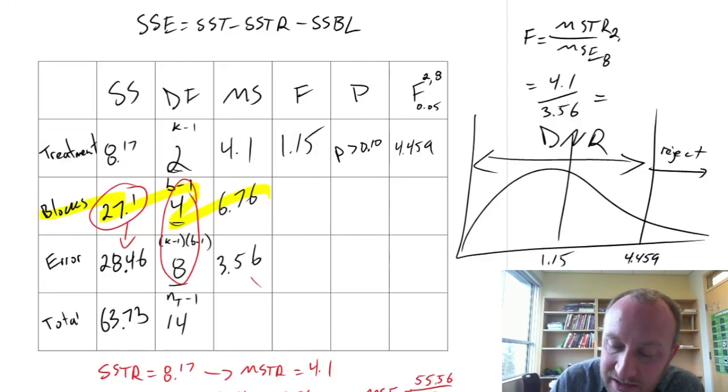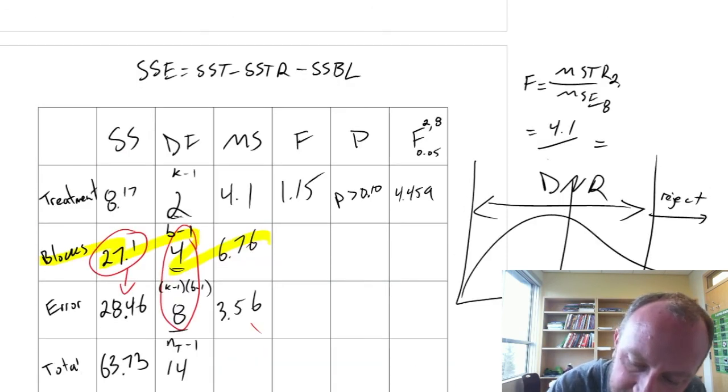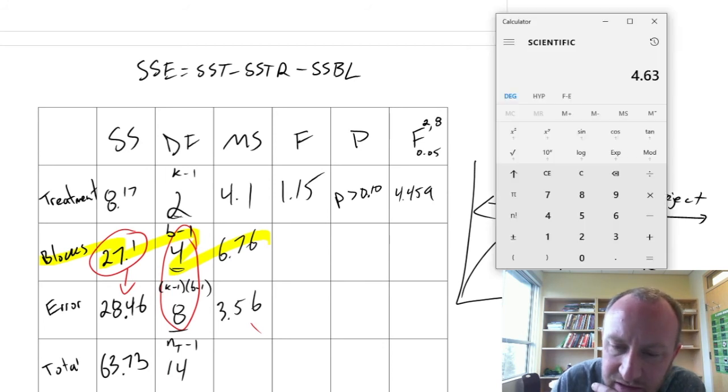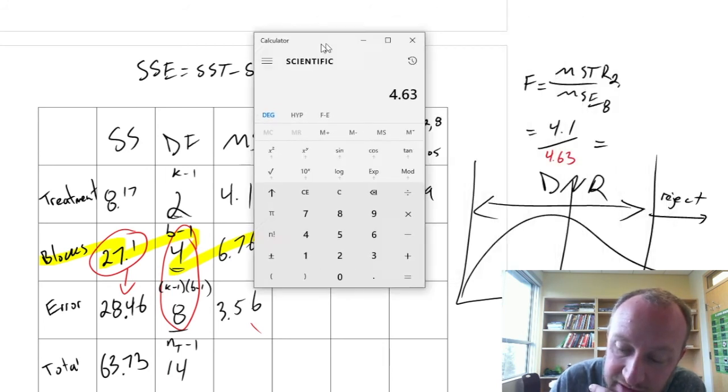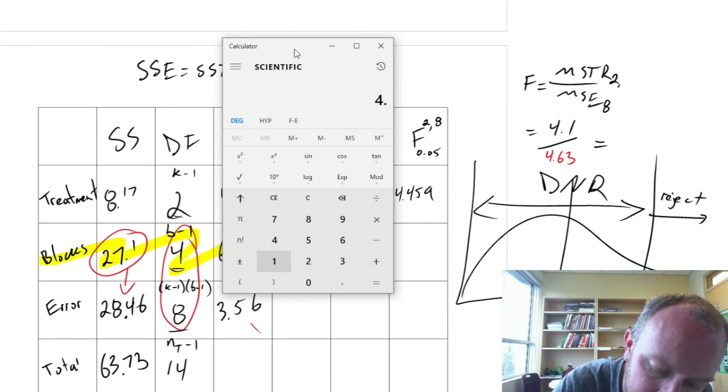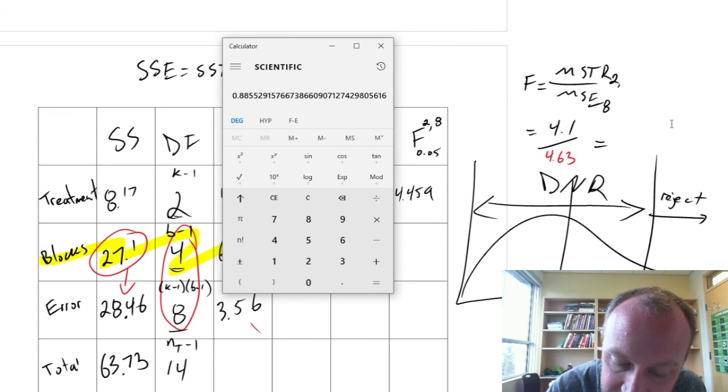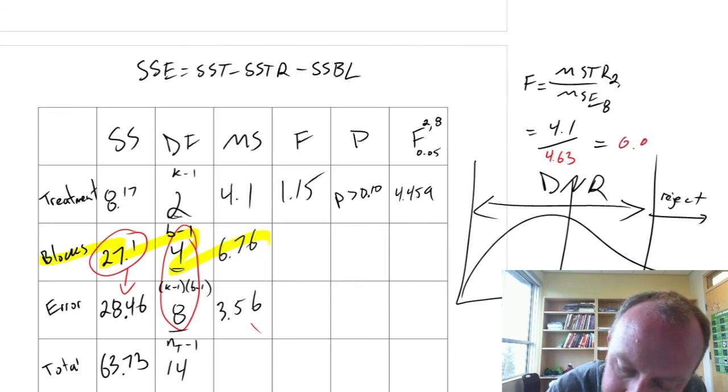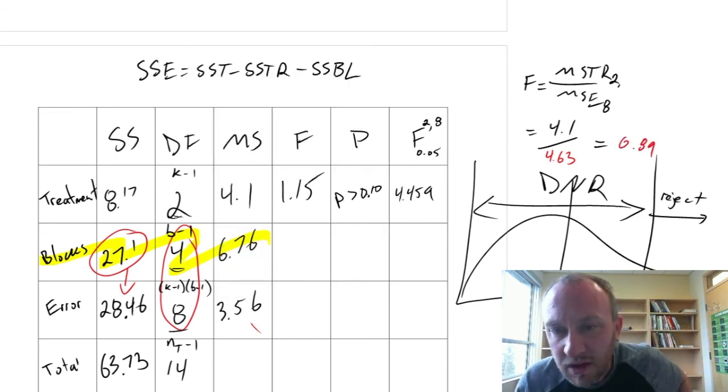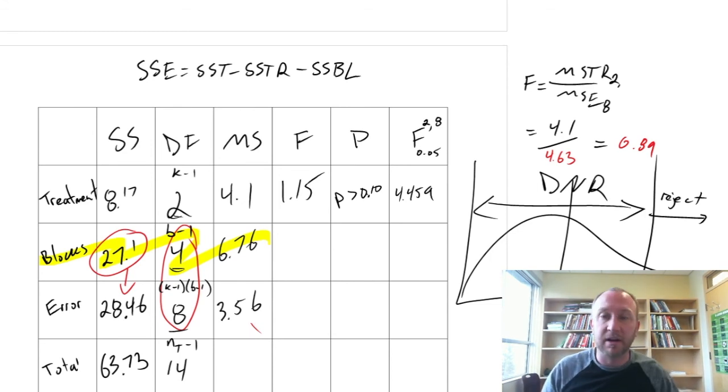But if we come back to our F statistic. Let me just put in our new SSE. So 4.63. That new F statistic now, as you can see, is going to be somewhat smaller. 4.1 divided by 4.63. That would now give us an F statistic of 0.89. So, point of the story. I'm a little bit off topic here.